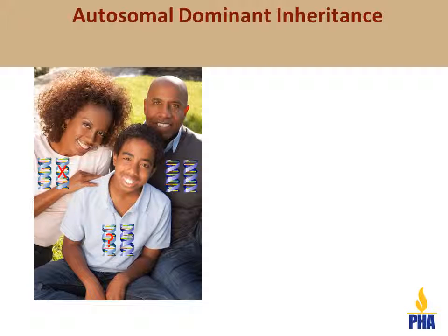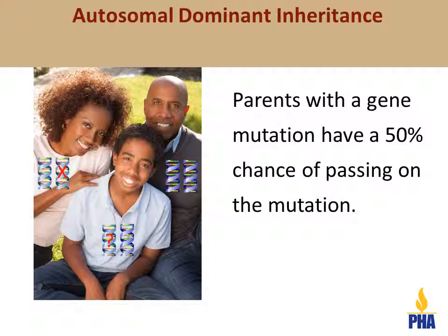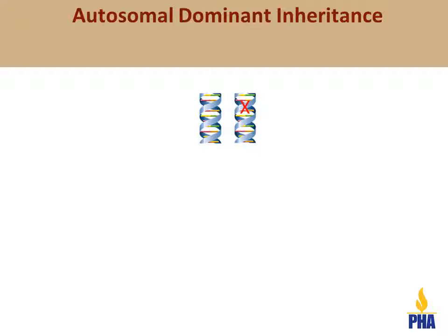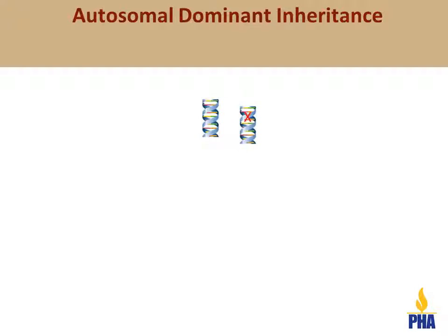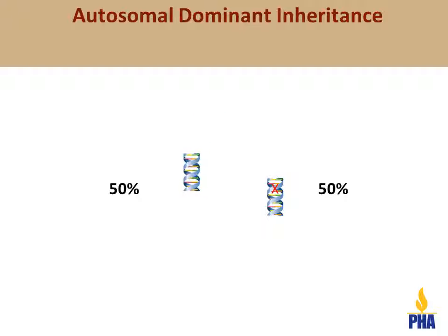Children, parents, and siblings of individuals with a pulmonary hypertension gene mutation have a 50% chance of having the same mutation. This is because pulmonary hypertension is inherited in an autosomal dominant manner. Dominant means that you only need to have a mutation in one of your two copies of the gene in order to be at risk to develop the disease. People with a genetic form have one gene with a mutation and one copy without. Therefore, when they have children, they have a 50%, or 1 in 2, chance to pass on the mutated copy, and a 50% chance to pass on the copy without the mutation.